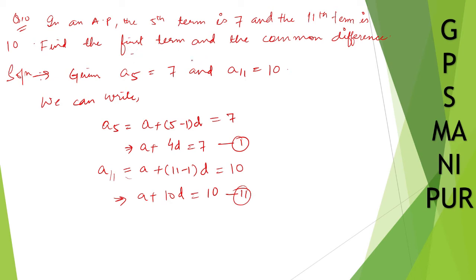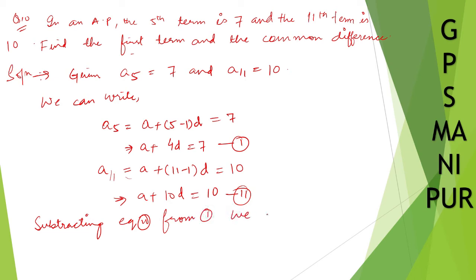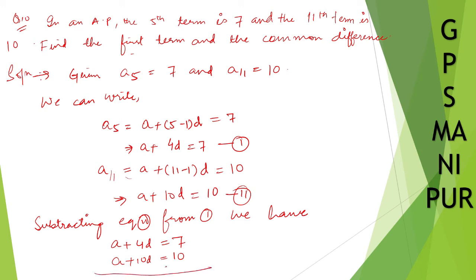We need to find first term a and the common difference d. So we need to solve these two equations. Subtracting equation number two from one: a plus 4d = 7 minus a plus 10d = 10. The a terms cancel, giving minus 6d is equal to minus 3.